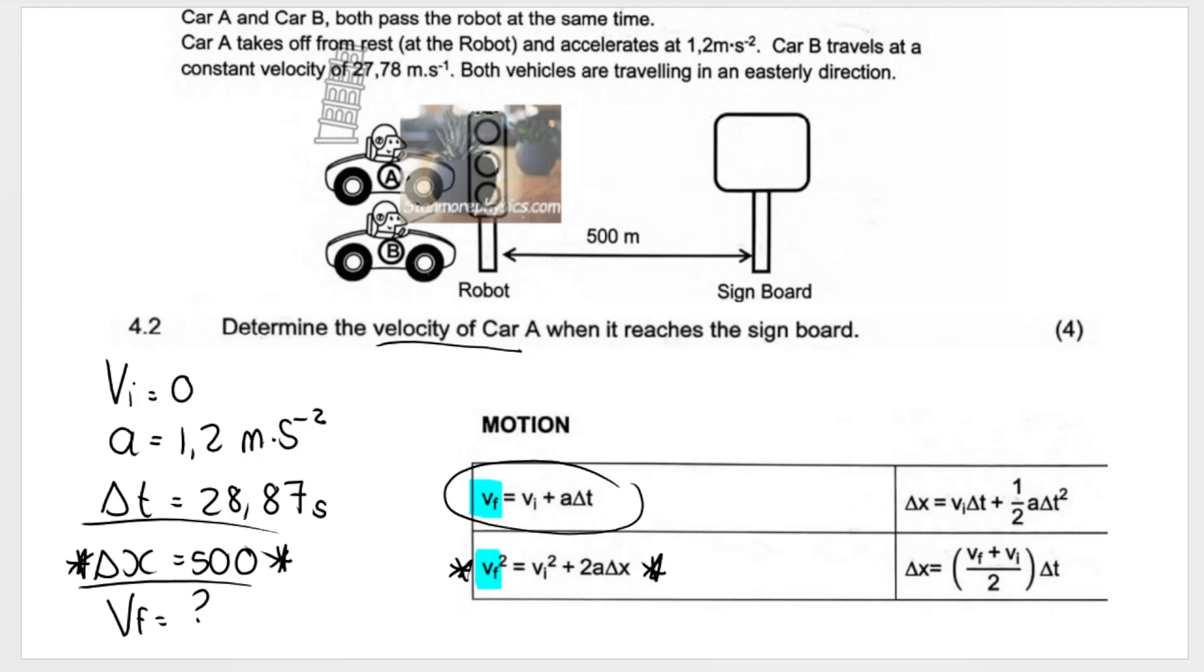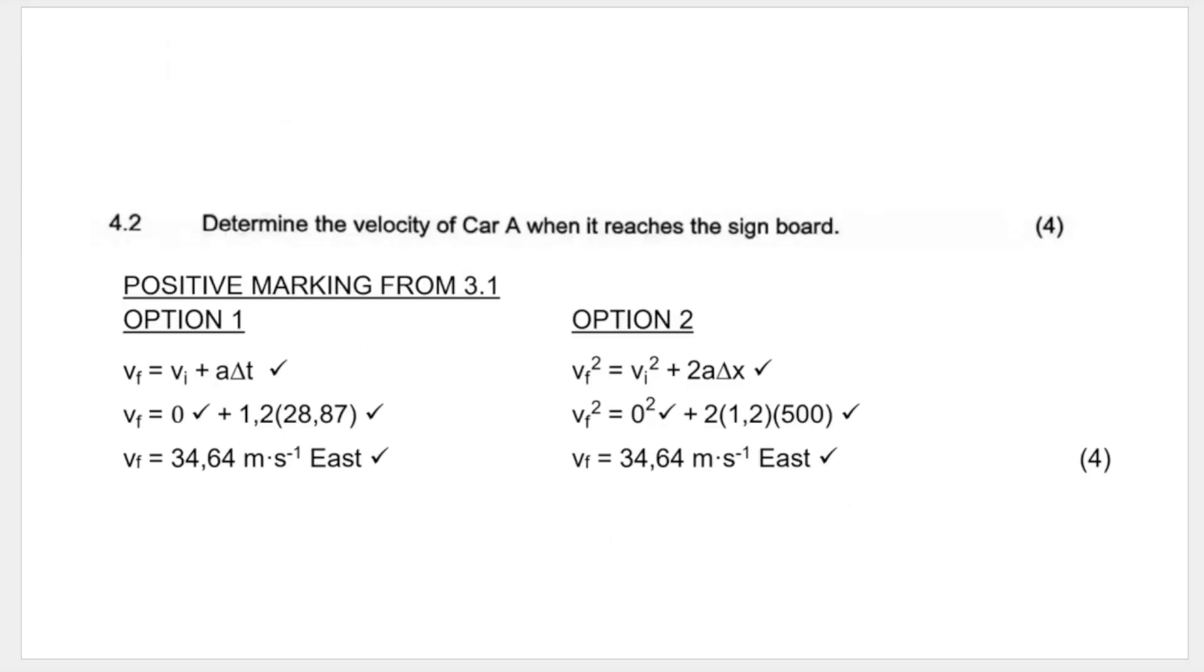So I would use this one. But you may use this one as well because we're looking for final velocity and final velocity appears in both of them. It doesn't make sense to use this one because there's no final velocity. You could also use this one. There are your two options.